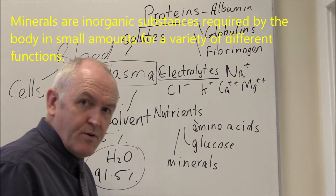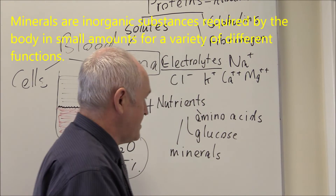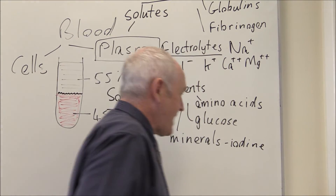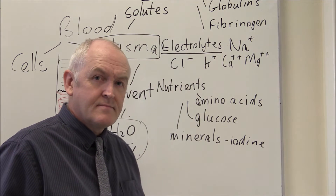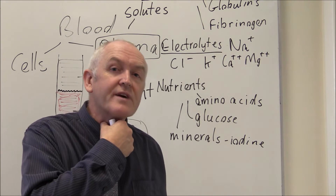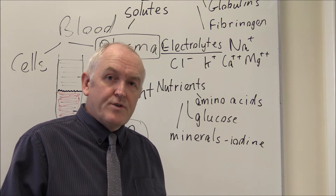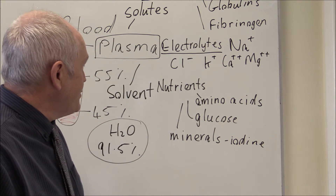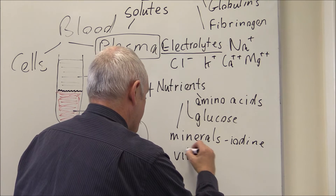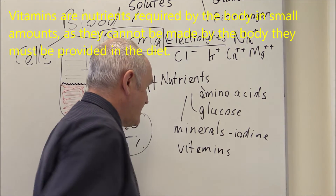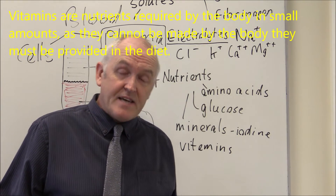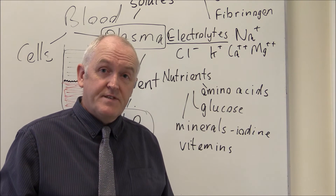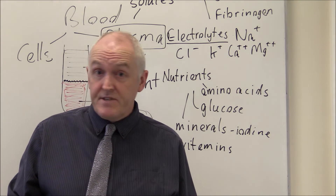Other nutrients are going to be minerals. Minerals are important - these are inorganic simple compounds. You might think of iodine, for example - the thyroid gland needs iodine in order to make thyroid hormone. Other soluble nutrients in the blood are going to be vitamins. The vitamins A, D, E, and K are the fat-soluble vitamins, and in the plasma we're going to find water-soluble vitamins: vitamins B1 to B11 and vitamin C.